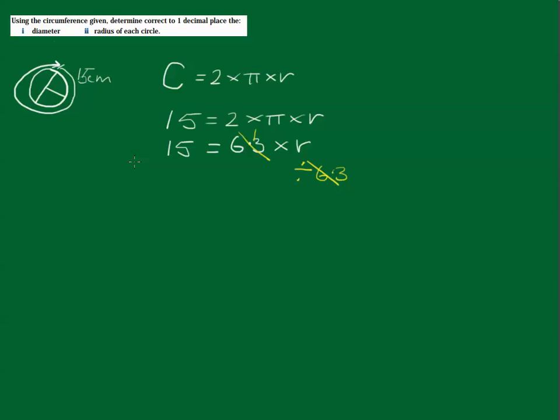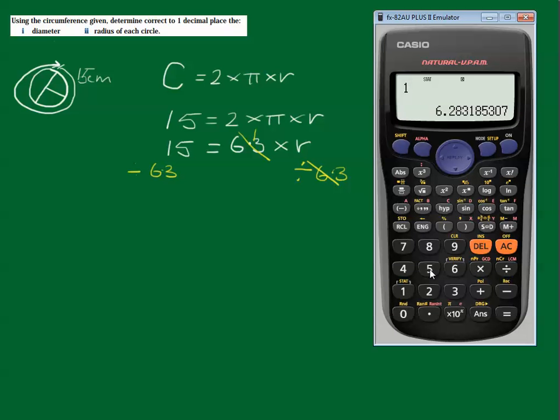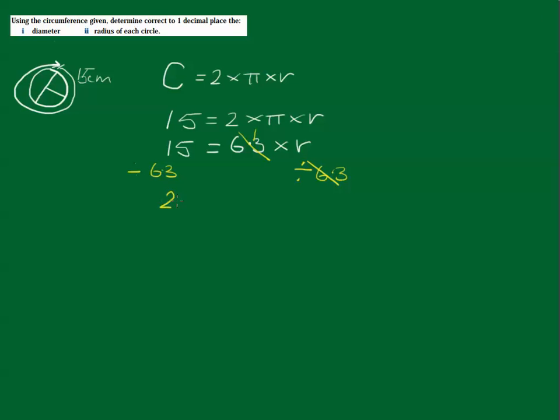And then we're going to divide this side by 6.3. Let's find out what that comes to. Okay, 15 divided by 6.3, the answer comes out to be 2.38, let's say 2.4. So 2.4 is equal to 1 times the radius, or just the radius. So we could say 2.4cm equals the radius.